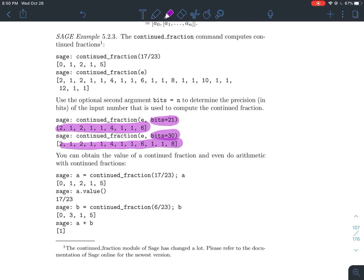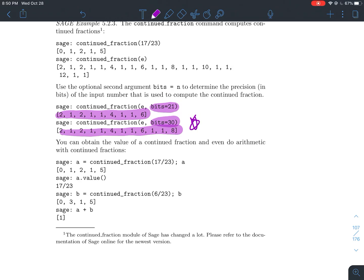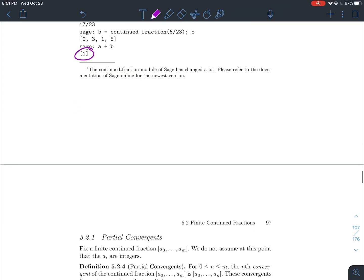And notice what it does. When you set bits to be 21, you get this continued fraction. When you change the bits to be 30, you get maybe a longer one. And so that means that because I want to compute e a little bit more accurately, I probably need more terms in my continued fraction. And also, you can do some arithmetic with continued fractions. So if a is the continued fraction of 17/23, and if b is the continued fraction of 6/23, when you add those two things together, SAGE knows what it means to add these things together. And of course, you should just get one, the continued fraction of one.